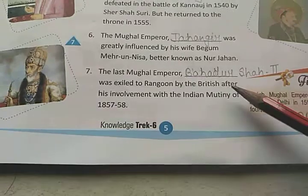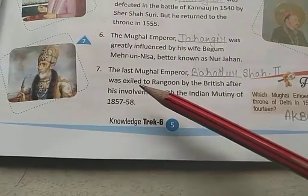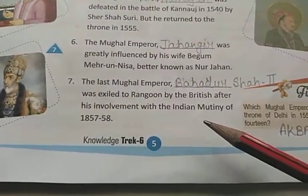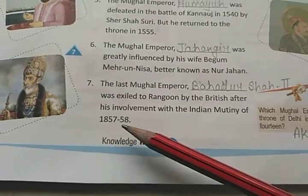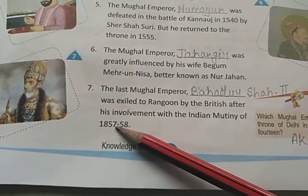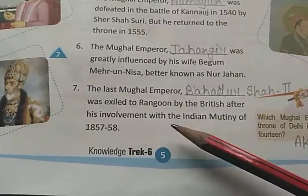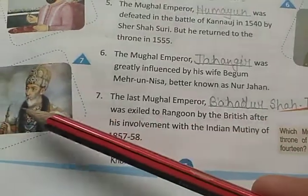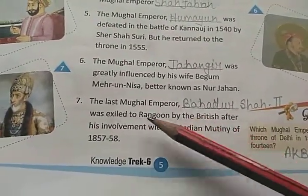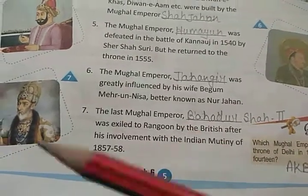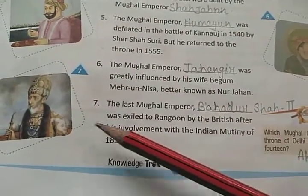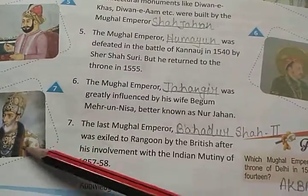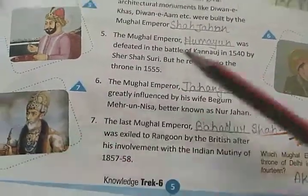Number 7: The last Mughal Emperor Bahadur Shah II was exiled to Rangoon by the British after his involvement with the Indian mutiny of 1857-58. Kyunki wo Indian vidrohiyon — jo bharatiye sainik the — unko saath de rahe the, isliye angrezon ne unko Rangoon bhijwa diya tha.